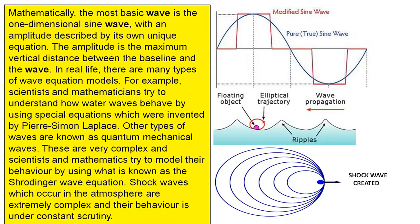Other types of waves are known as quantum mechanical waves. These are very complex and scientists and mathematicians try to model their behaviour by using what is known as the Schrödinger wave equation.